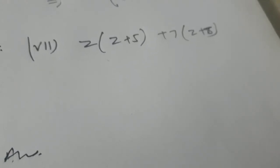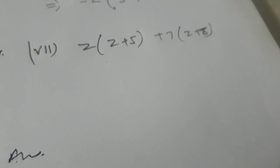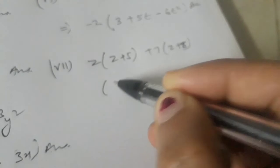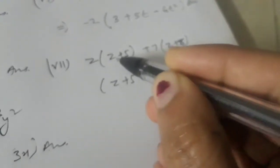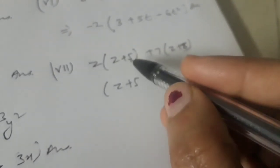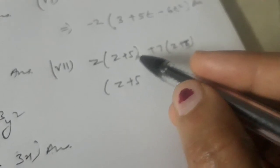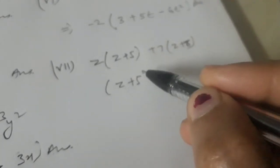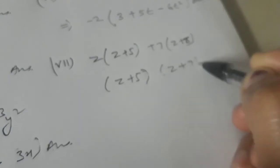The seventh part is z(z plus 5) plus 7(z plus 5). Here (z plus 5) is given on both sides as a common factor, so (z plus 5)(z plus 7) will be our answer.